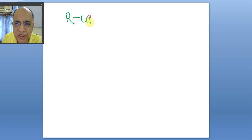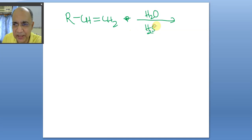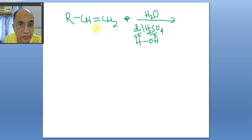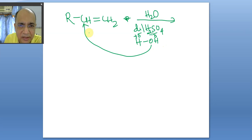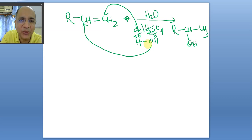Suppose we take a non-symmetrical alkene with H₂O and dilute sulfuric acid as the catalyst. For a lay student, Markovnikov's rule can be followed: for a non-symmetrical alkene with a polar addendum like water, the OH will go to the carbon bearing fewer hydrogen atoms and hydrogen goes to the other side. You get a Markovnikov alcohol as the regiospecific product.